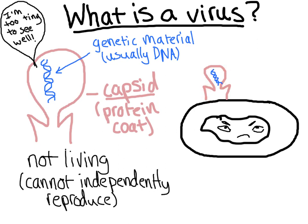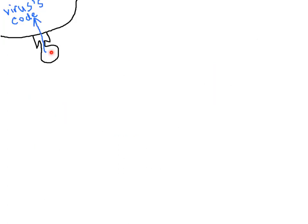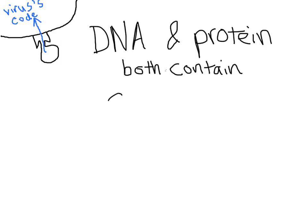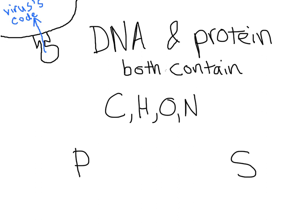And so they ran an experiment to test that. To figure out whether the virus's code was DNA or protein, Hershey and Chase needed to use their basic knowledge of these two macromolecules. Like any molecule, they're very small and hard to see. Also, they're remarkably similar to each other in that they both contain carbon, hydrogen, oxygen, and nitrogen. The only lucky difference is that DNA contains phosphorus in its phosphate groups, whereas protein contains sulfur that helps hold the complex structures of the protein together.